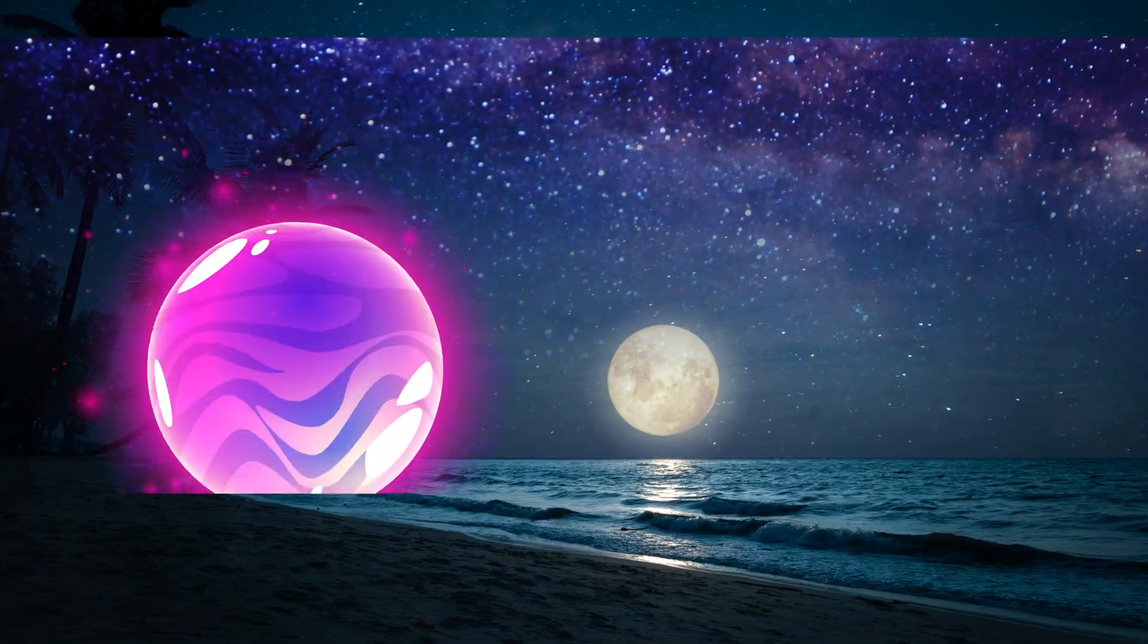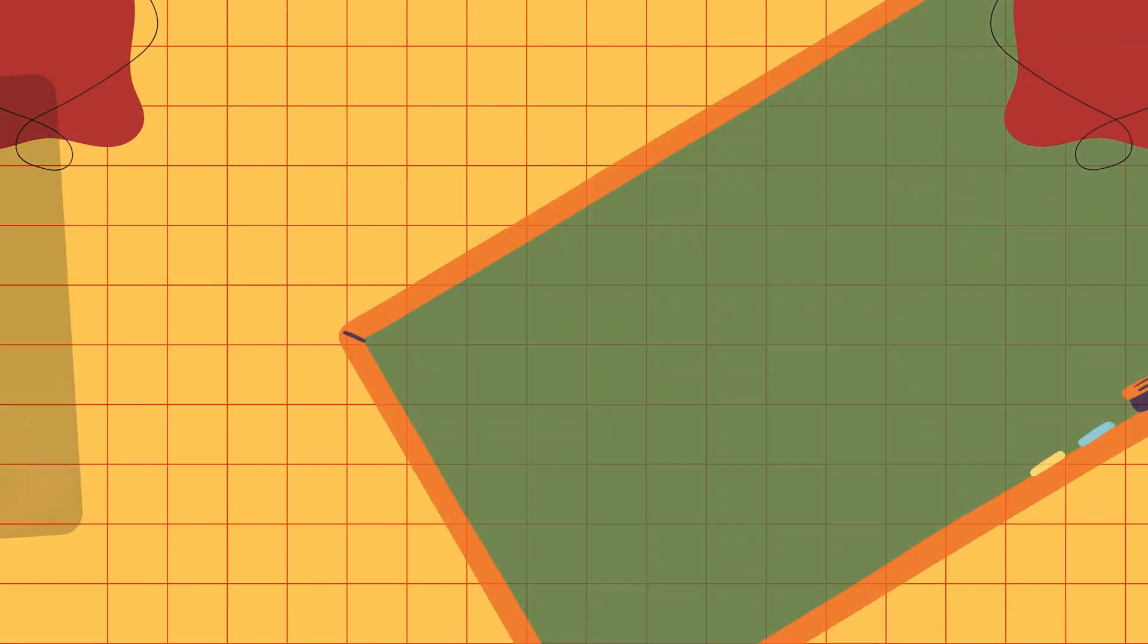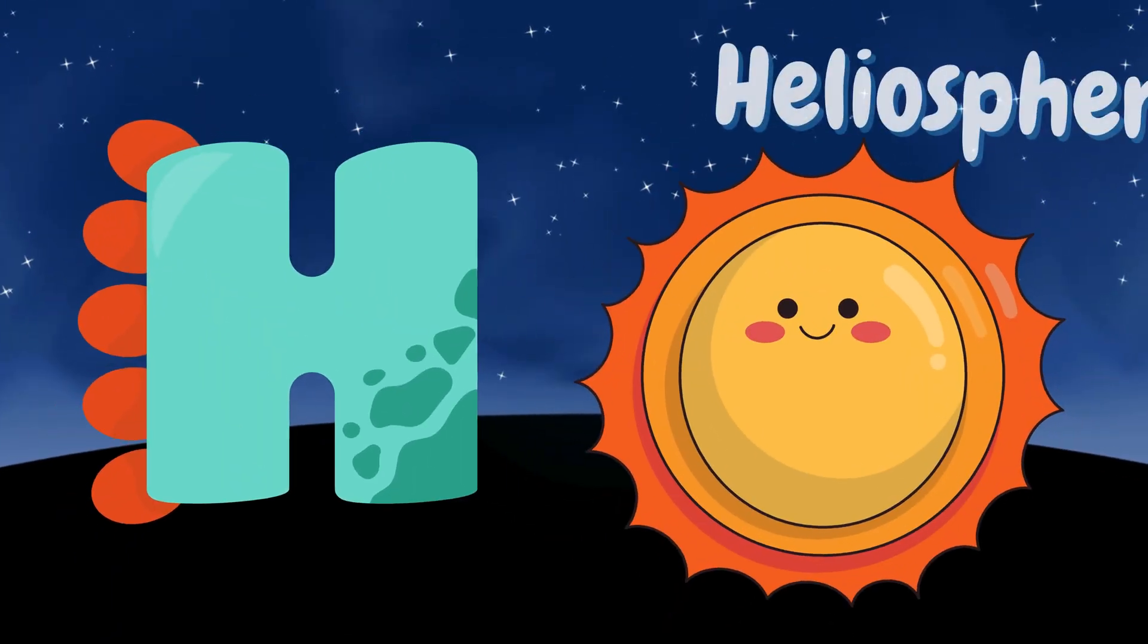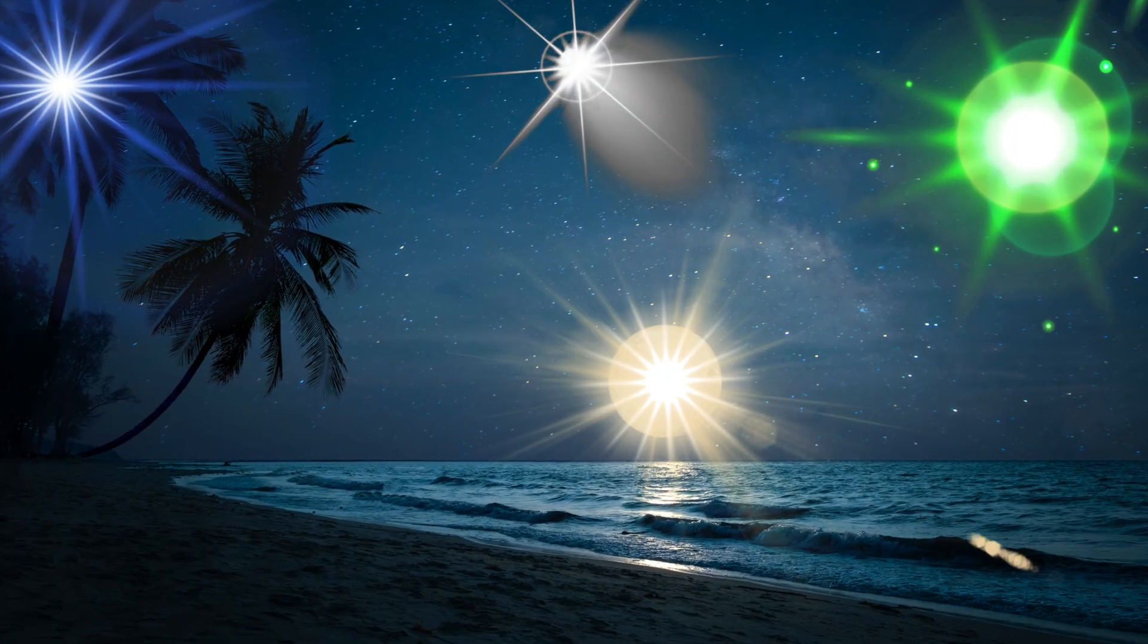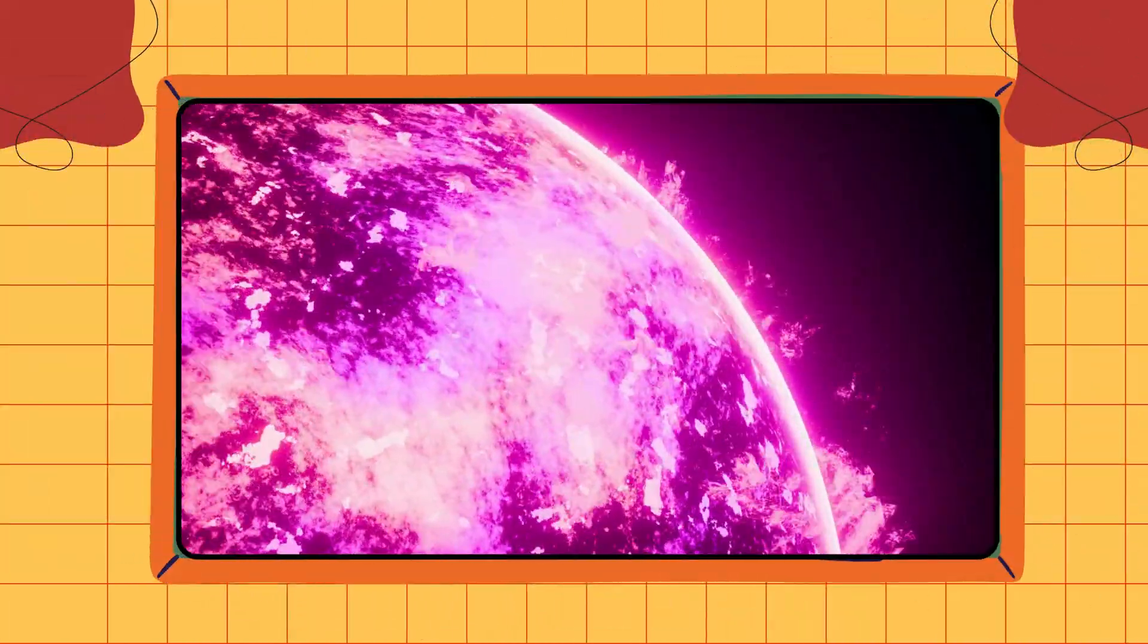G is for galaxy. Galaxies are star cities swirling in space. H is for heliosphere. The heliosphere is the sun's invisible space bubble.